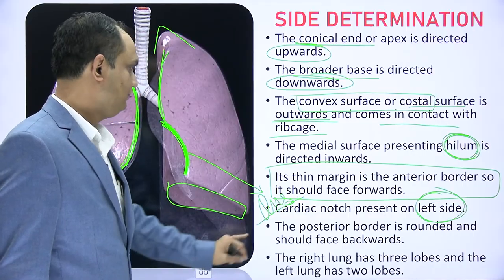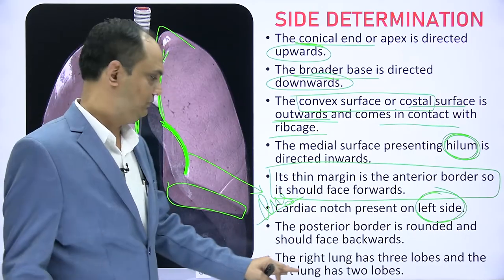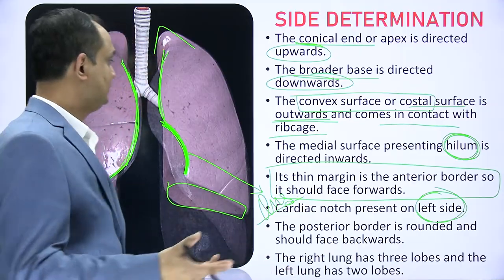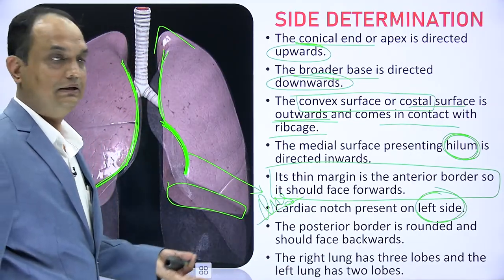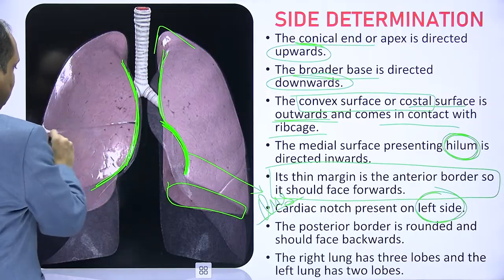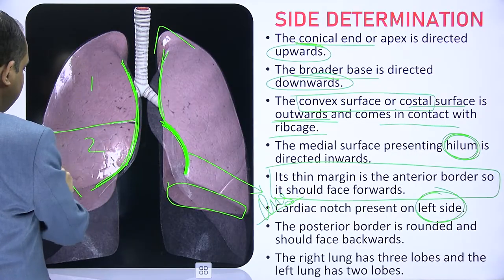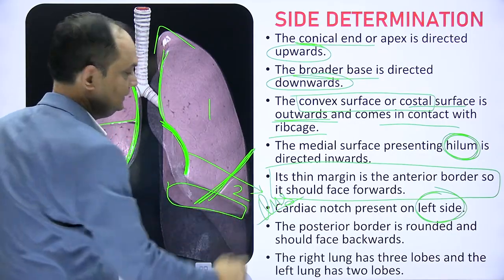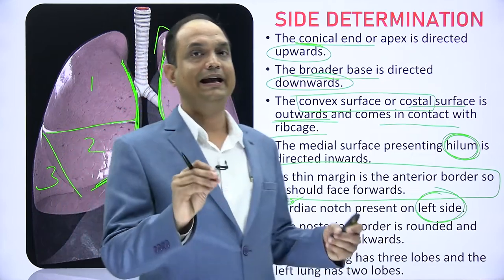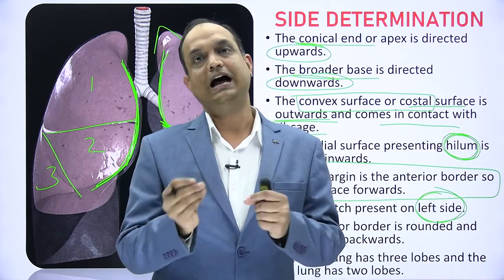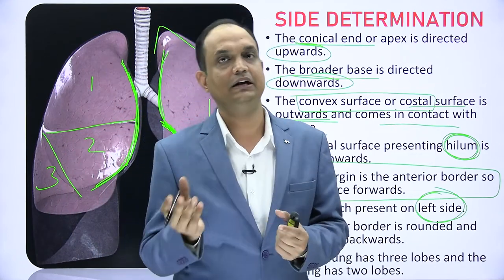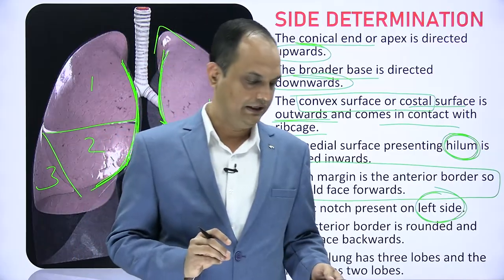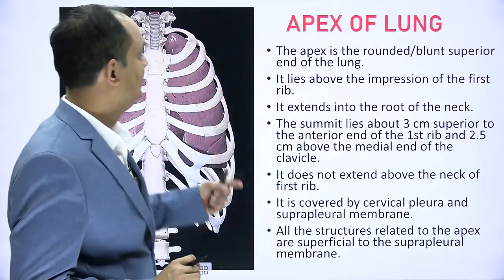The posterior border is round and should face backward. The right lung has three lobes and two fissures, while the left lung has two lobes and one fissure. So to identify the side, the most important features are the cardiac notch on the anterior border of the left lung, and the number of lobes.